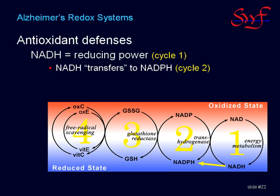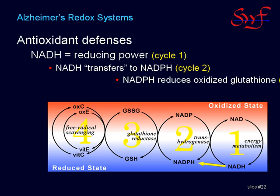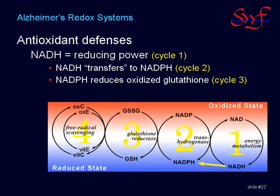But it doesn't stop there. Where cycle 2 touches cycle 3, glutathione reductase uses NADPH to reduce oxidized glutathione, GSSG, back into reduced glutathione, GSH. The pool of reduced glutathione is the single largest reservoir of reducing equivalents in the body. It is the chemical foundation of life and the key to a non-Alzheimer brain.